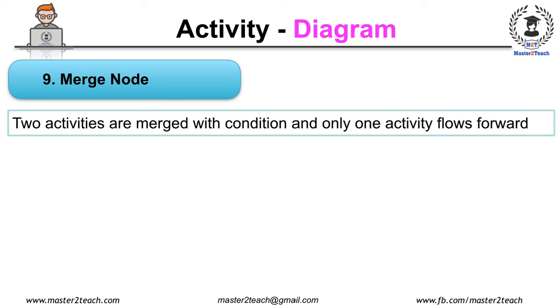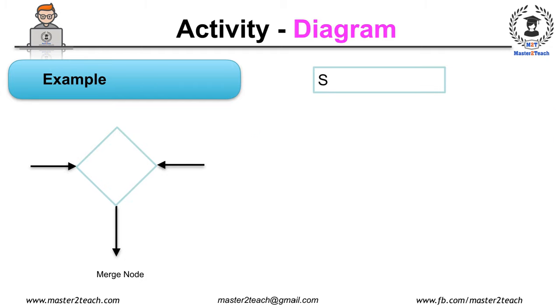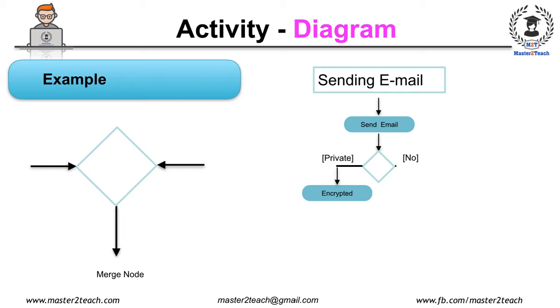Where two activities are merged with the condition and one activity flows forward as shown in the figure. For example, while sending email, if the email is private, encrypt it before sending it. And if not private, send as regular email.